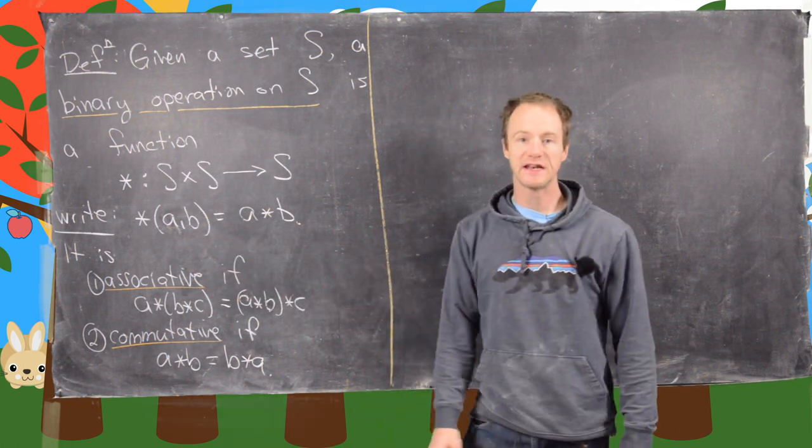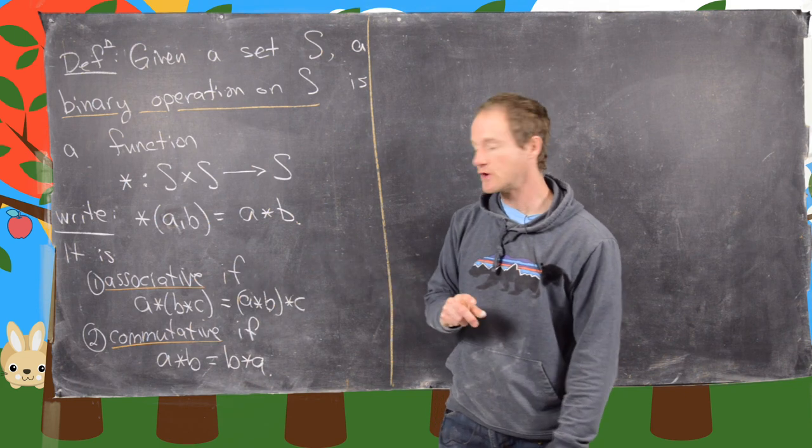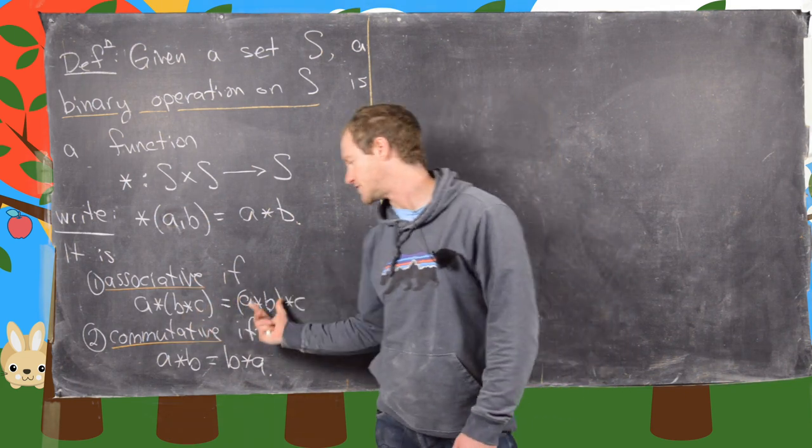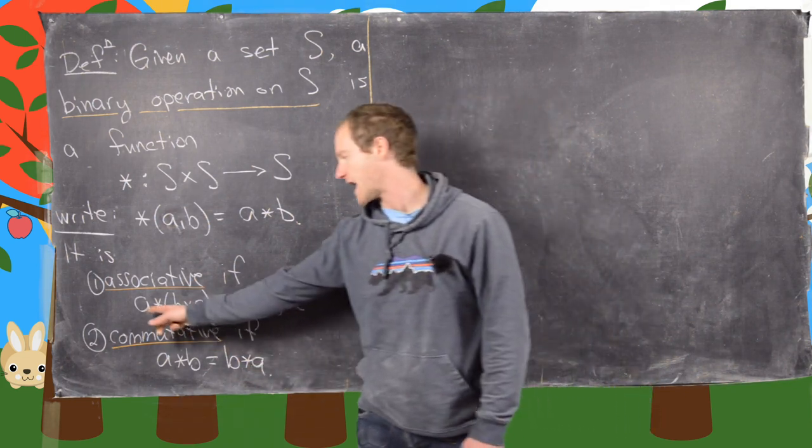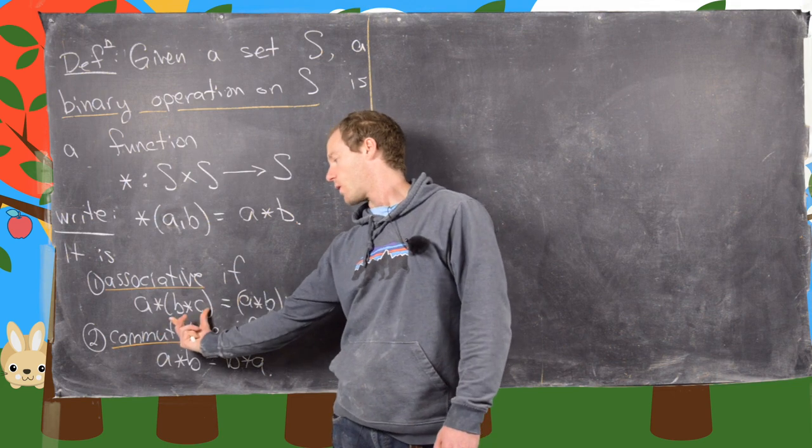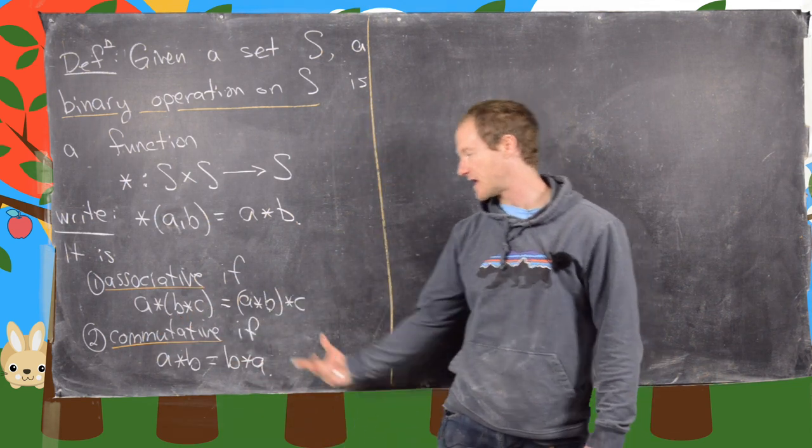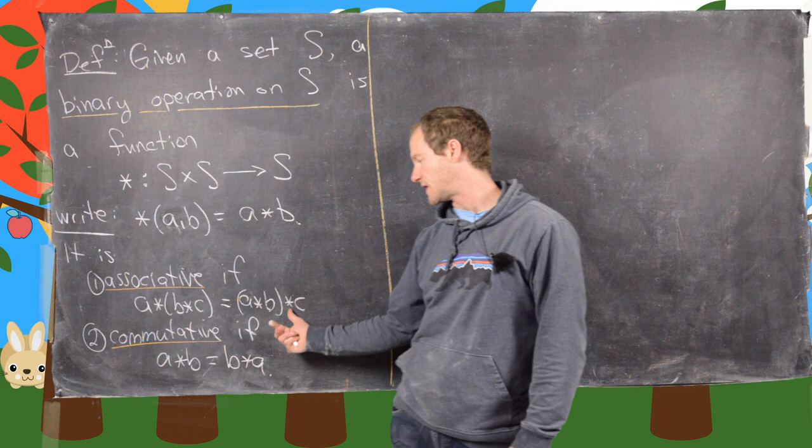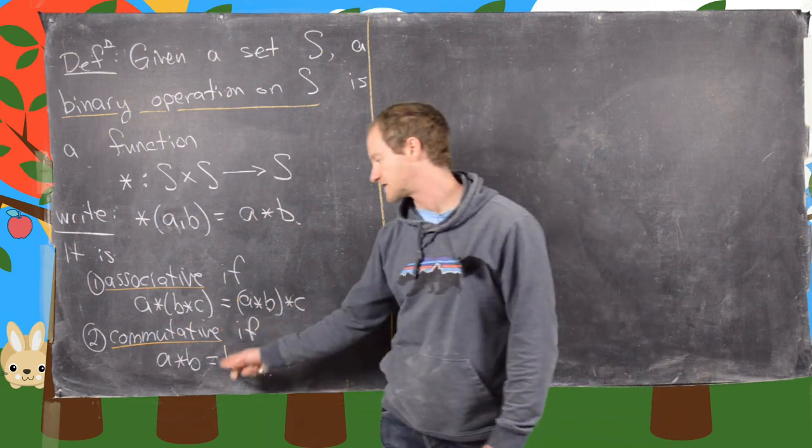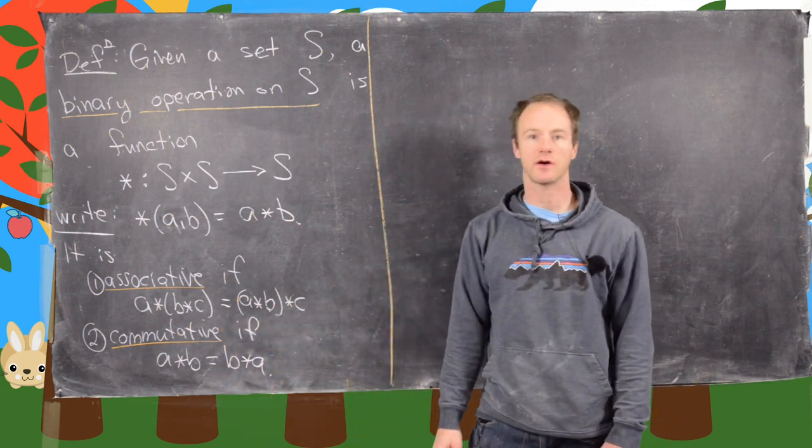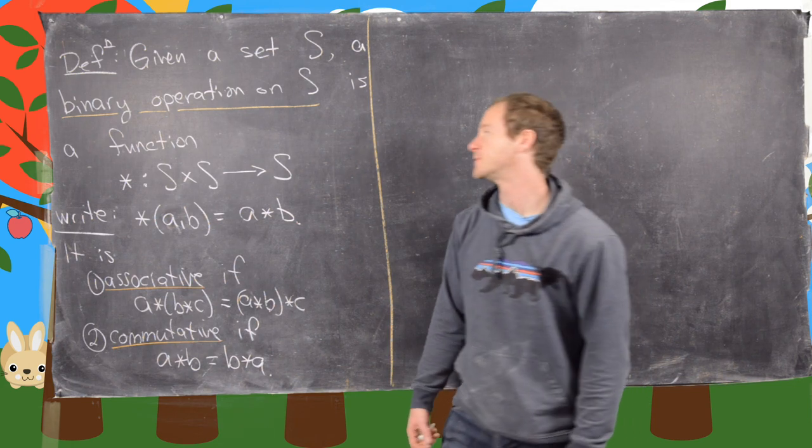And so in addition, we say that it is associative if it doesn't matter how we do grouping. So in other words, A star the quantity B star C is the same thing as the quantity A star B star C. And then we say that it's commutative if A star B equals B star A.